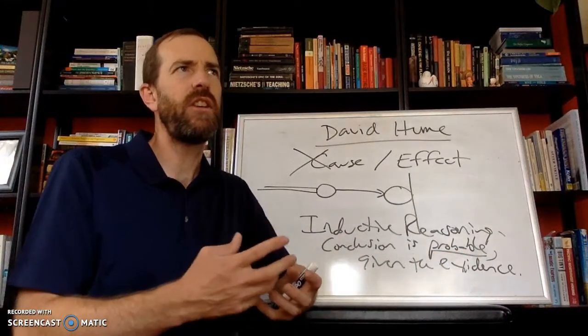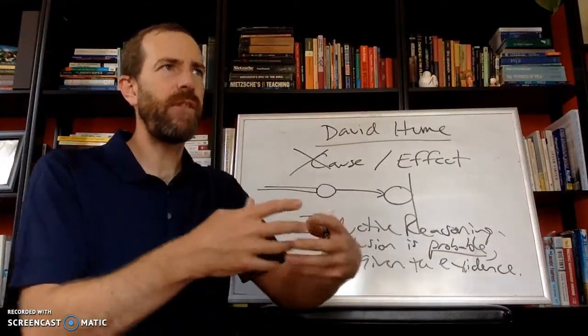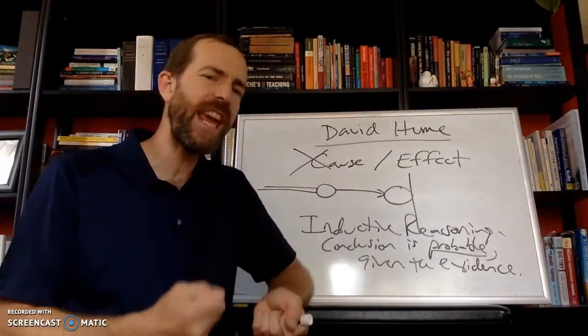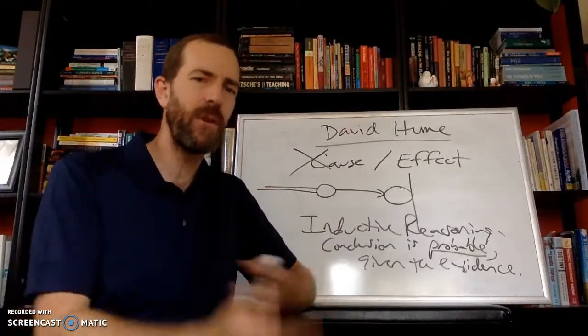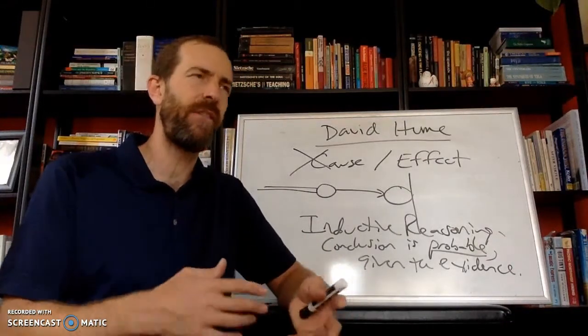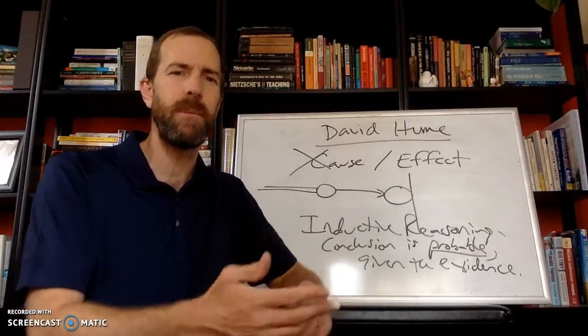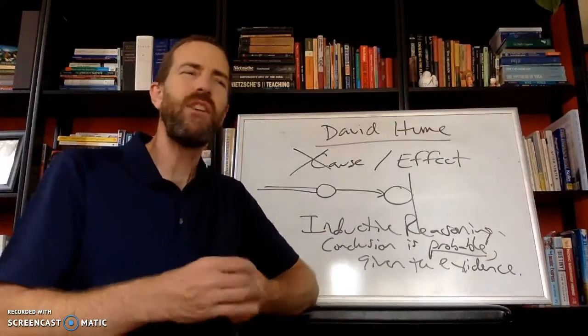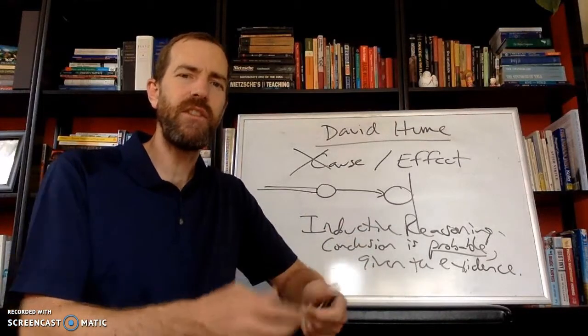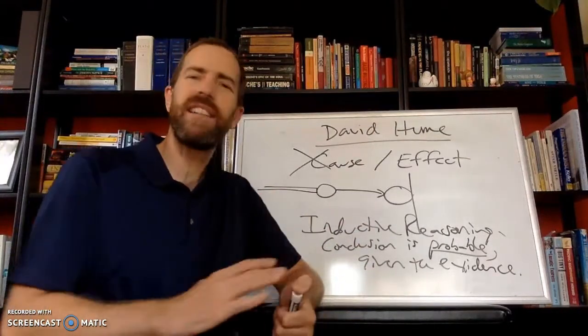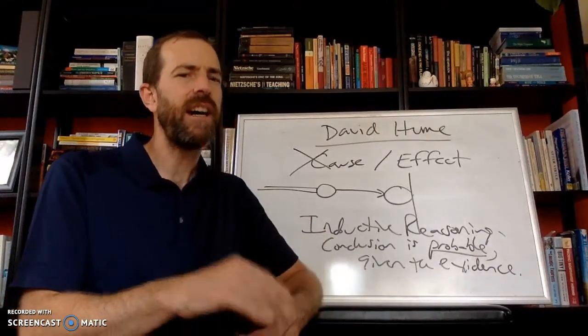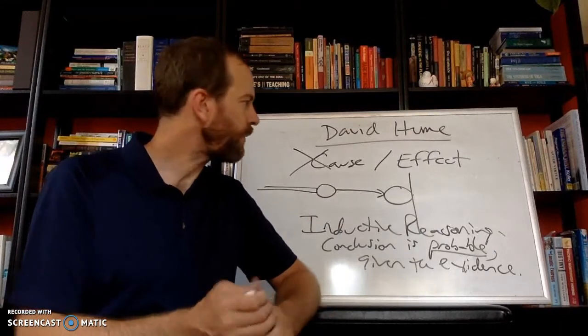And Hume argues that when you leave your office as a philosopher, you put on your coat of faith that the world operates according to cause and effect. So he wouldn't challenge anyone to test cause and effect out by walking out into the middle of a busy street. You trust that things are causally related, but you do so based on inductive reasoning, on probabilistic reasoning, not with any degree of certainty.